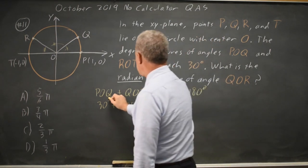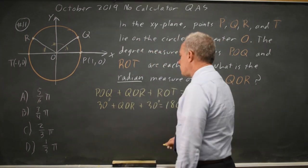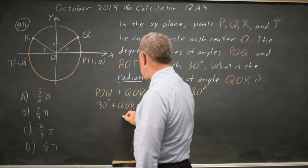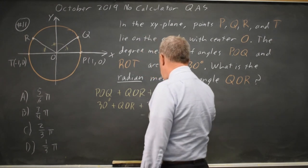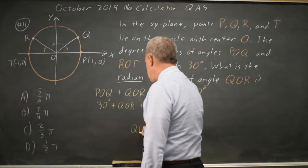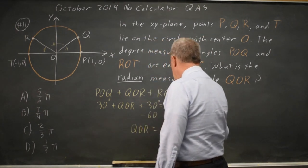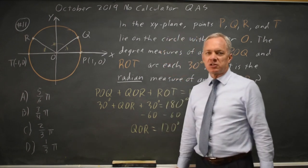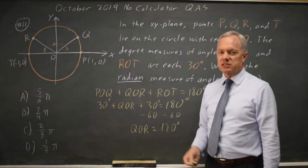I'll put in the degree symbols. So that's QOR plus 60. If I subtract 60 from both sides, I get QOR equals 120 degrees. And 120 is not a choice because they told us to convert to radians